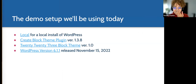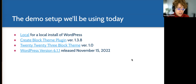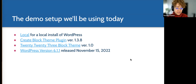My demo setup today: we're going to be using Local for the local environment, the Create Block Theme plugin, Twenty Twenty-Three, and WordPress 6.1.1 — all the latest versions. Because when you're putting a plugin on your site, there are things you want to check, like whether that plugin is compatible with the latest version you're using.